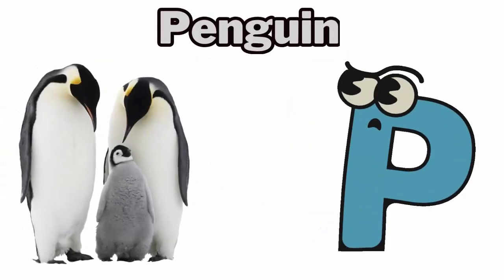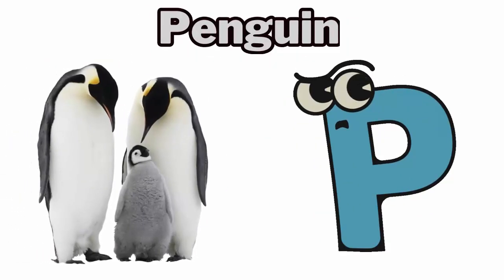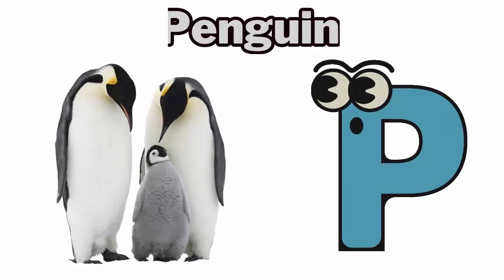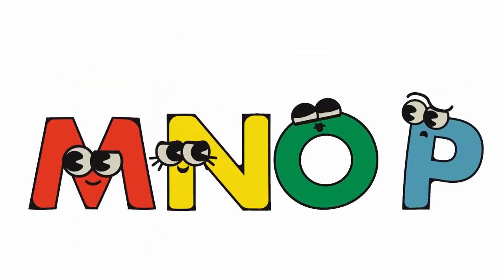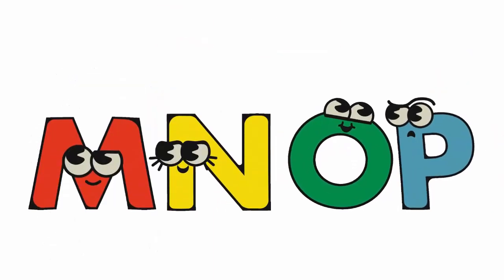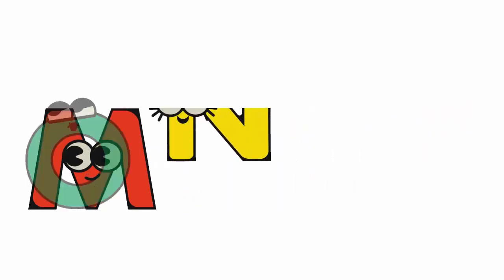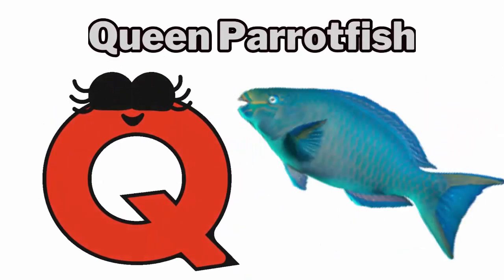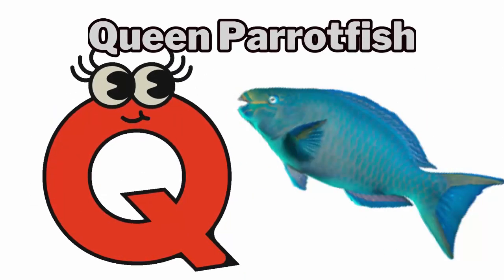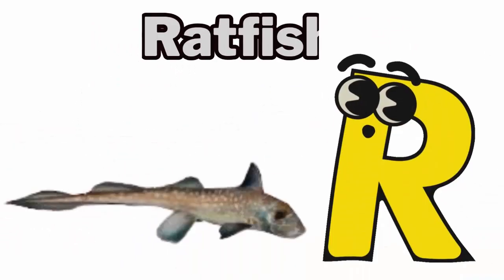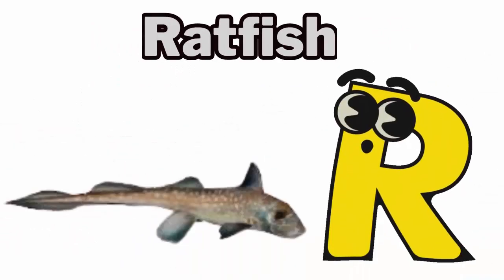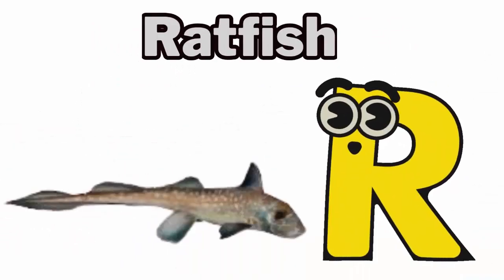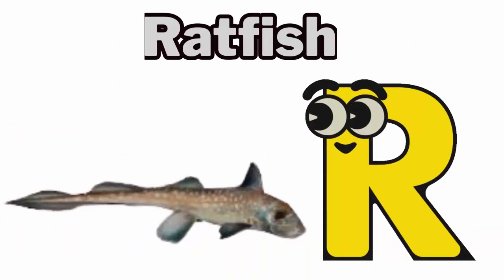P is for penguin, fuh, penguin. Q is for queen parrotfish, quh, queen parrotfish. R is for ratfish, r, ratfish.